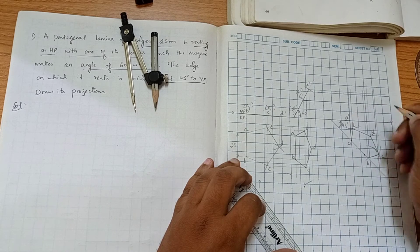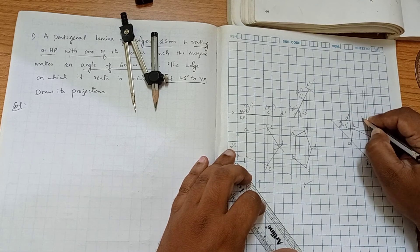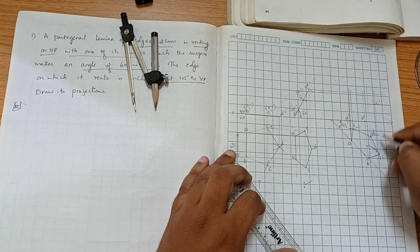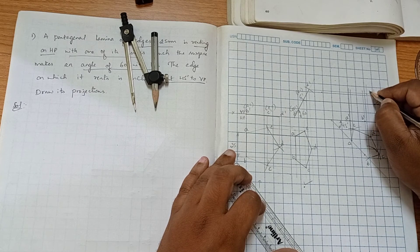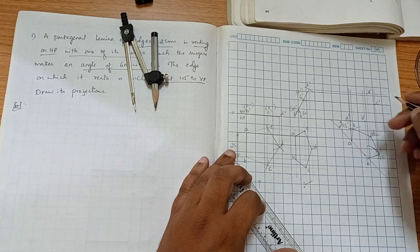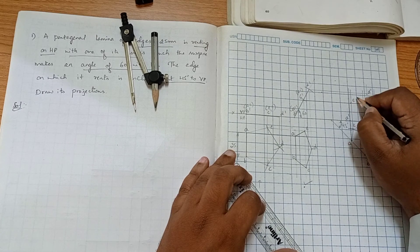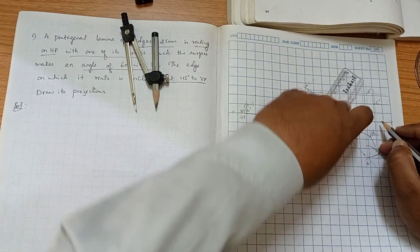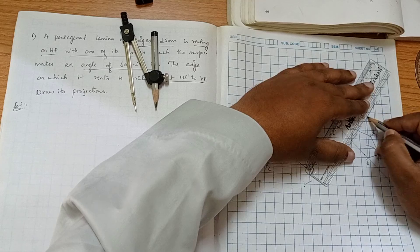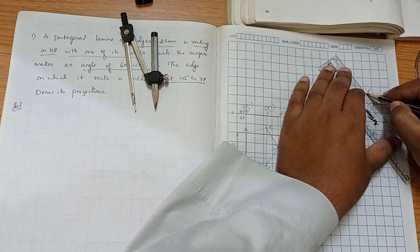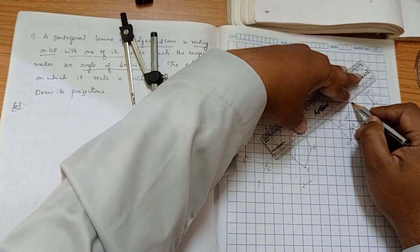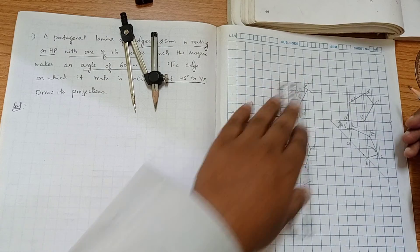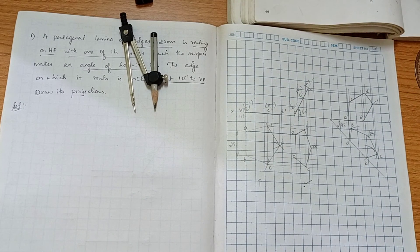So this is A dash, and similarly we have B dash here, C dash, D dash, this is B dash. So this is what your problem. Okay, thank you.